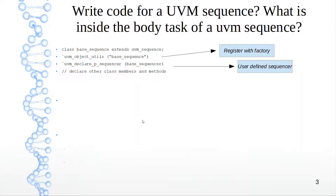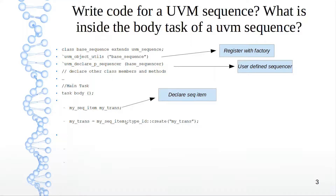Then you declare other class members — methods, functions, tasks — whatever you need in this region. Then you have your main task, the body task, which we discussed earlier. The first thing is declaring your sequence item — I'm calling it my_trans. My sequence item extends from a UVM sequence item, which itself extends from the UVM transaction. I'm calling it my_trans.